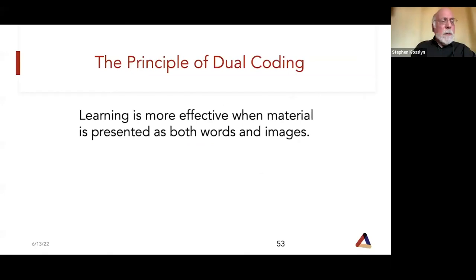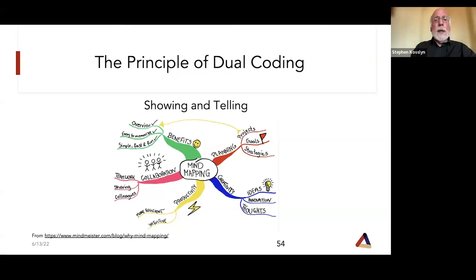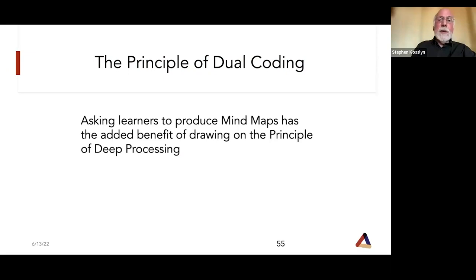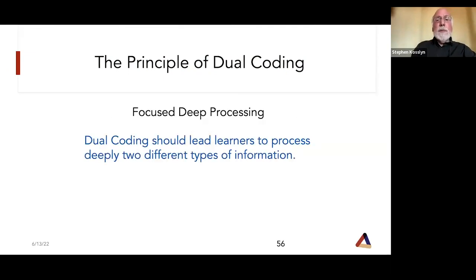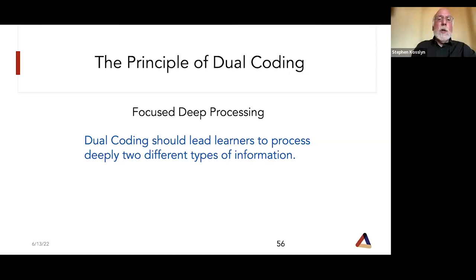The third principle: learning is more effective when material is presented as both words and images — the principle of dual coding. Showing and telling is better than just showing or telling. Mind mapping is a neat way to do this because you use spatial and visual aspects to help organize verbal information. Asking learners to produce mind maps has the added benefit of drawing on deep processing as well. Dual coding leads learners to process two different modalities — usually visual and verbal, but it could also be auditory and verbal depending on what you're teaching.